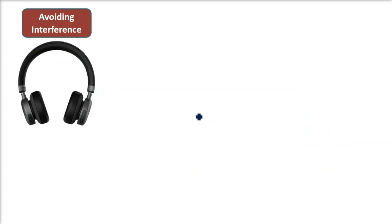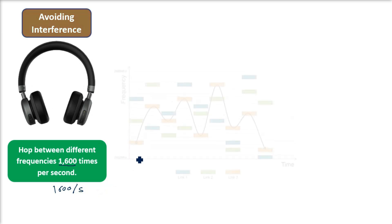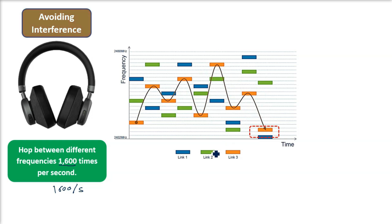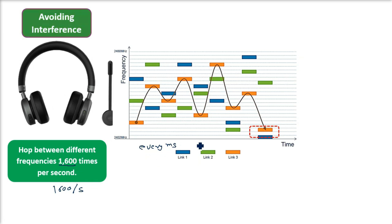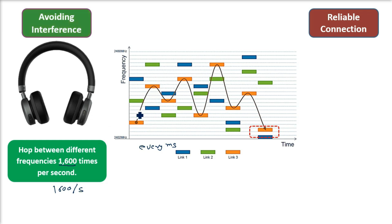Frequency hopping किस तरह मदद करती है? पहली चीज़ यह है कि यह interference को avoid करती है। Bluetooth devices इस तरह design किए गए हैं कि यह अलग-अलग frequencies पर 1600 times per second frequency change कर सके। अगर एक frequency busy हो जाए या interfere हो जाए — जैसे कि किसी Wi-Fi से — तो headphones और phone clear frequency पर चले जाते हैं। यहीं पर frequency hopping important हो जाती है।